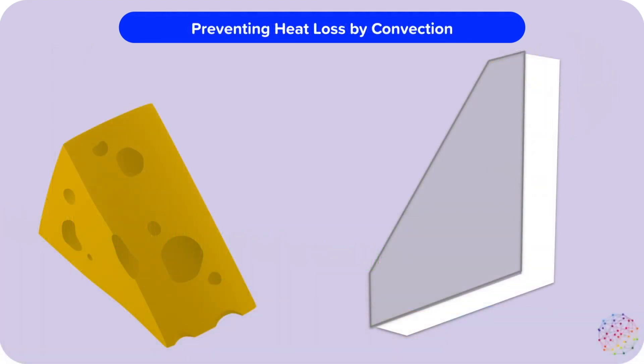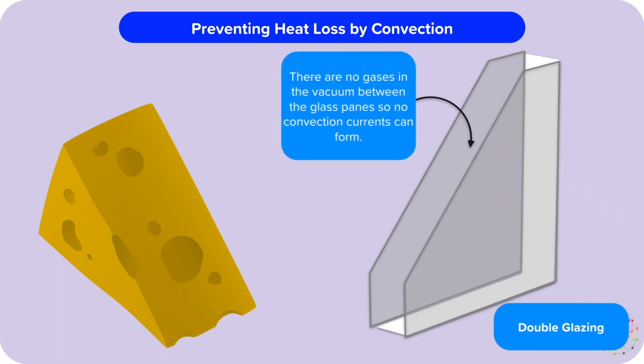Preventing heat loss by convection. To prevent heat loss by convection, we need to stop convection currents forming. This can be done by having no fluids, such as using solids or a vacuum for insulation. For example, double glazing has a vacuum, or very low density gas, between two panes of glass. Convection currents can't form in that gap, so no heat can be lost via convection.